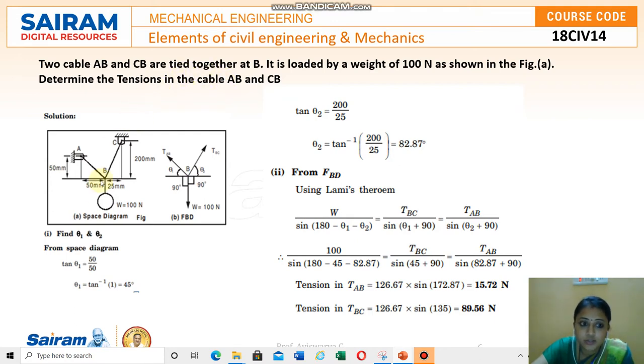So this is the question. How to deal with this? We shall see. Here you can see this cable AB and CB tied together at B, loaded with a weight of 100 N. They have given some dimensions.